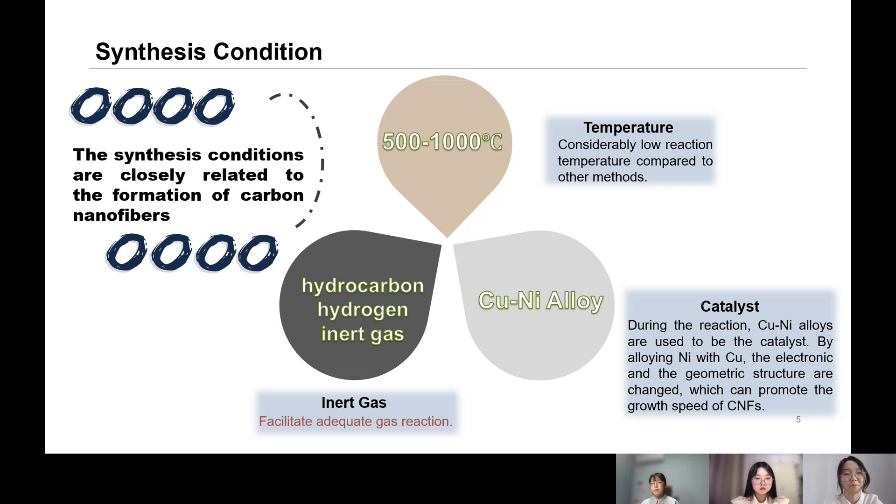As for inert gas, it is used to facilitate adequate gas reaction by continuously blowing those raw materials into the reaction chamber. As for catalyst, by alloying nickel with copper, the electronic and geometric structures can be changed, which can promote the growth speed of the carbon nanofibers.